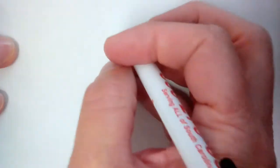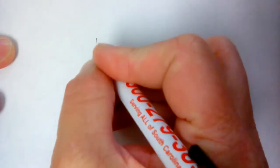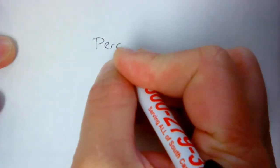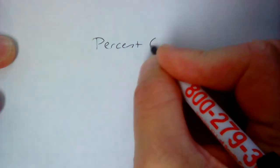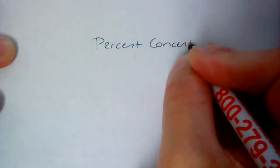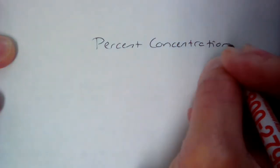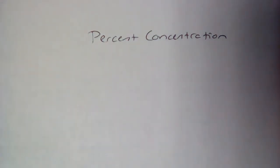Alright, the last math topic in this unit is percent concentration. Percent concentration is used commercially when describing solutions. For example, fruit juices. If a fruit juice says it contains 10 percent juice, that's a percent concentration. So if you buy a liter of the fruit juice, you can count on...